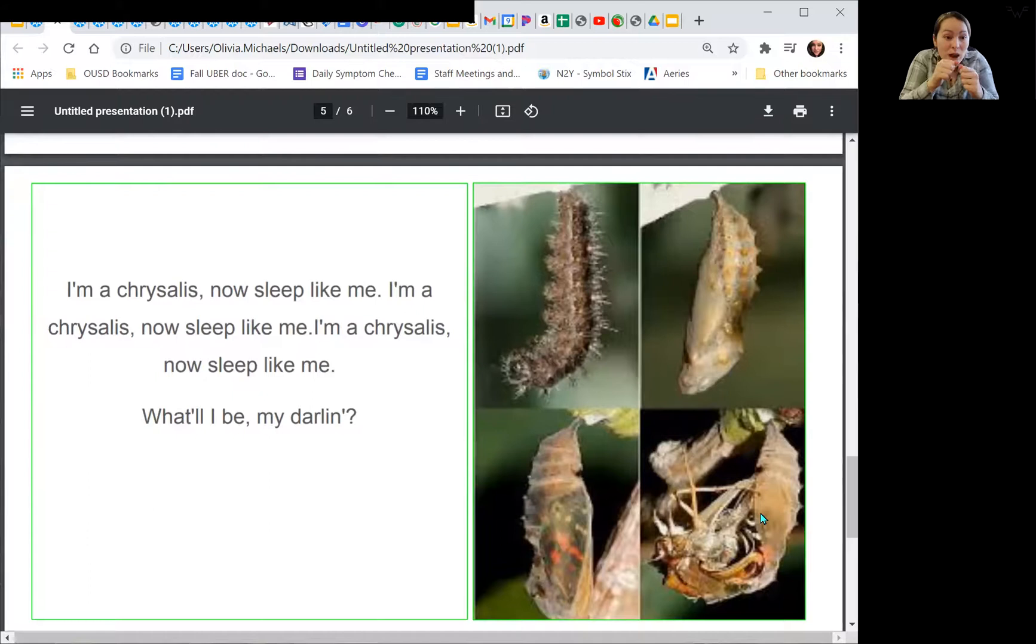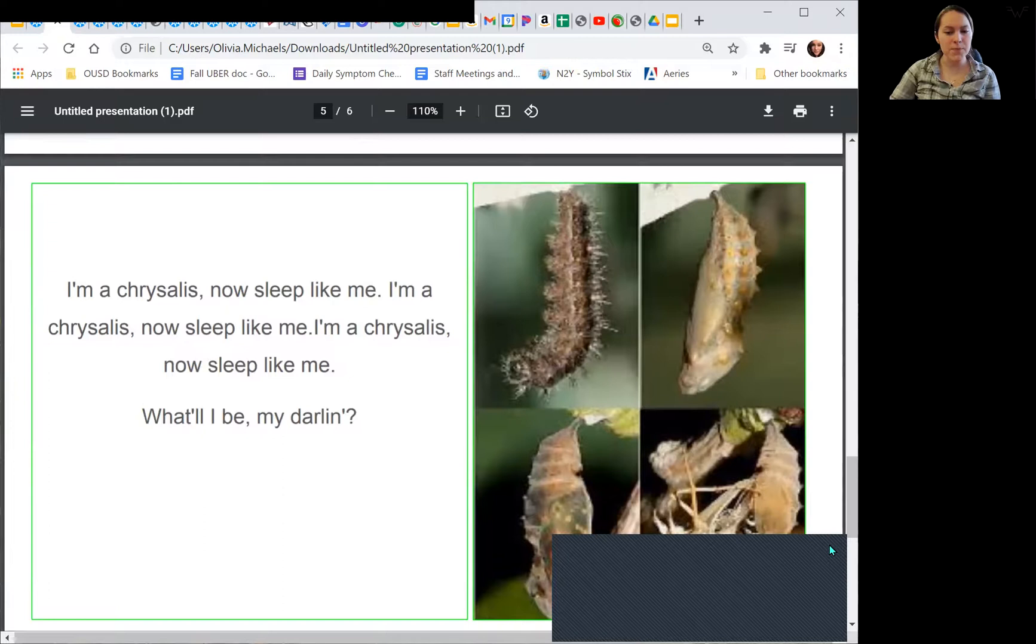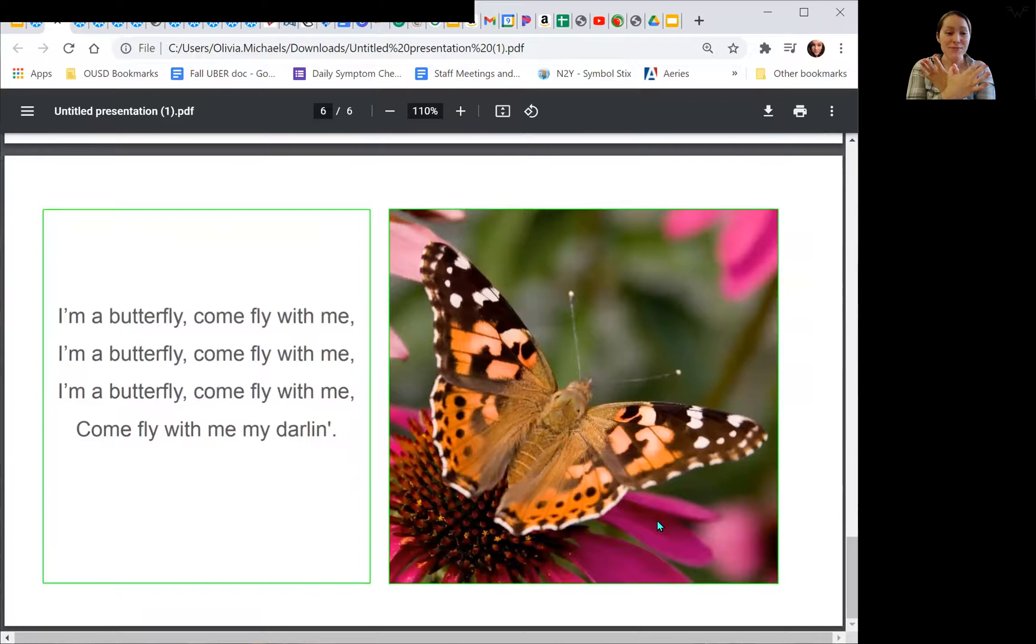Friends, do you remember what happens to the caterpillar when it's ready to come out of its cocoon? Do you remember? I remember. It becomes a beautiful butterfly. Okay. Are you ready? We can either flutter our butterfly wings like this, or we can use our whole arms and we can flap our butterfly wings. Okay. One, two, three, go.